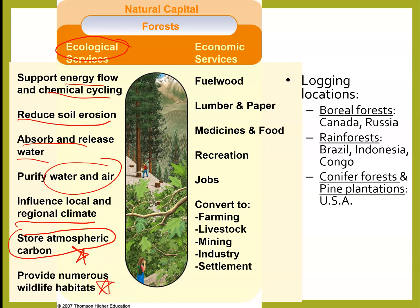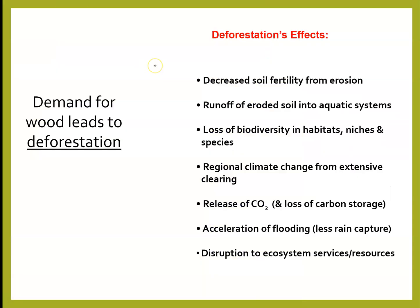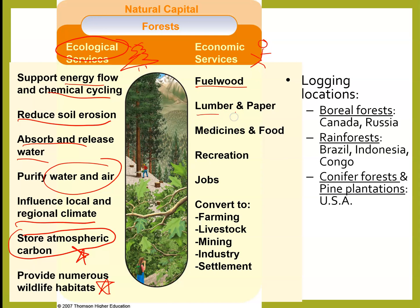Some economic services of trees are more about people. They are used as fuel; forests get turned into lumber and paper; they're used in medicine and food; and we use them in recreation — hiking and camping. They also provide jobs for lots of people, from the people that cut them down to those who sell those trees. Trees can also be used in farming, livestock practices, mining, lots of industries, and in our housing and settlements. Trees are incredibly important for all life. A lot of key logging locations are in Canada, Russia, Brazil, Indonesia, the Congo, and the United States.